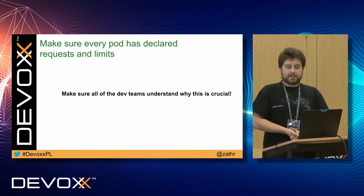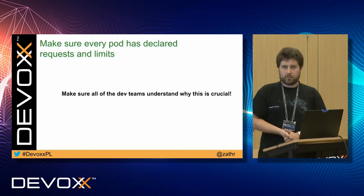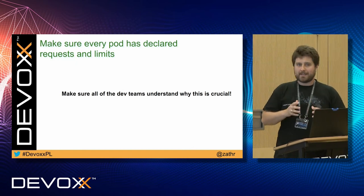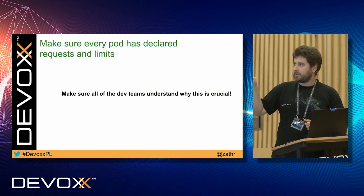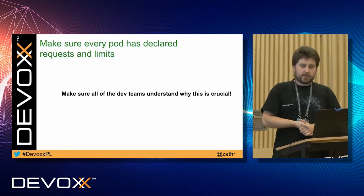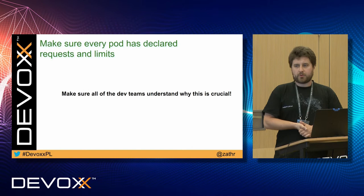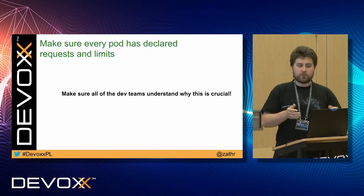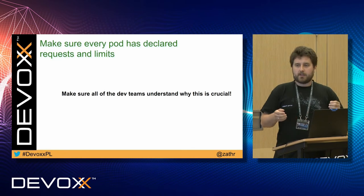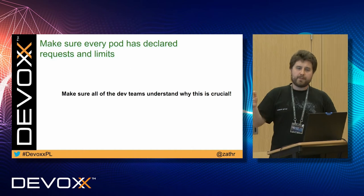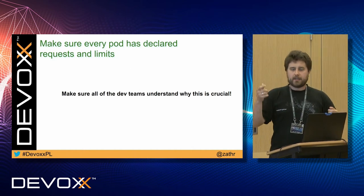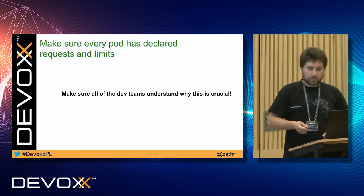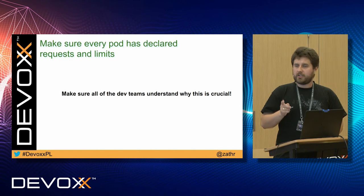Make sure every pod has declared requests and limits. That is paramount. If I were to limit this presentation to one single item, this would be it. Without it, there's nothing that stands between you and over-provisioning. If you run your cluster on the edge and a node fails and you have no limits and requests declared, pods that were lost will be recreated on another node, will deplete your resources, will be killed off, recreated on another node, and so on until your cluster fails. Make sure everyone on your team understands this.